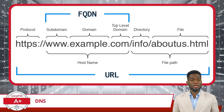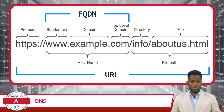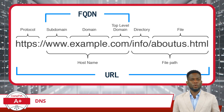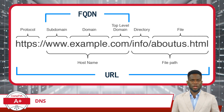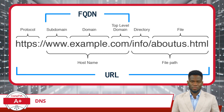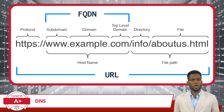For an example, let's take the URL https://www.example.com/info/aboutus.html and slice out a portion of it. The FQDN will include 'www' as the subdomain, 'example' as the domain, and '.com' as the top-level domain.